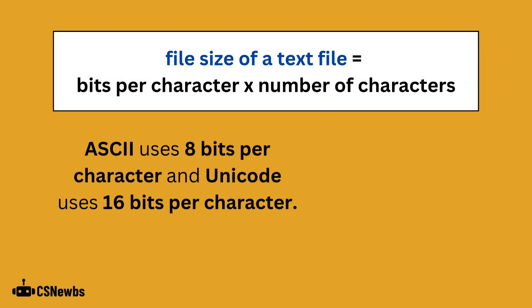The file size of a text file is calculated by multiplying the bits per character by the number of characters. As a reminder, ASCII uses 8 bits per character and Unicode uses 16 bits per character.